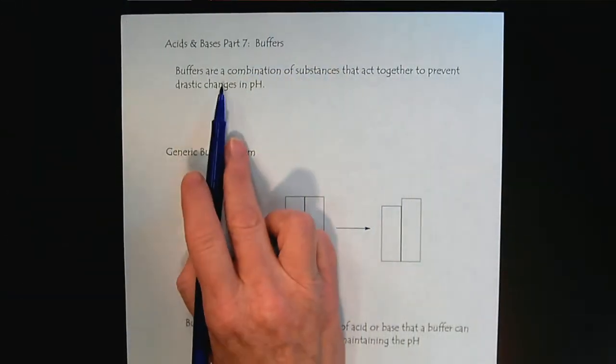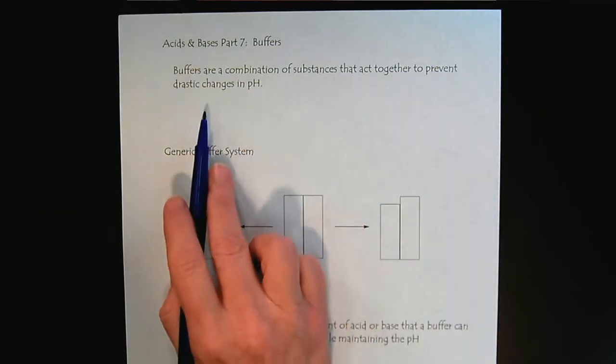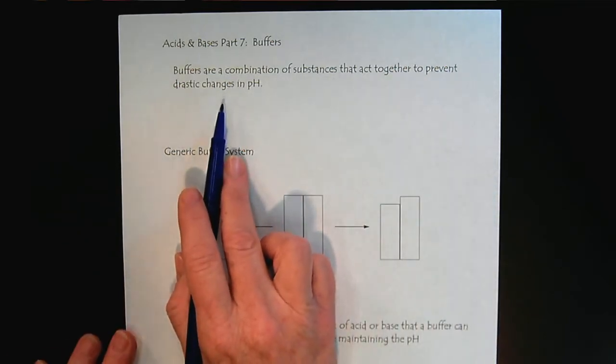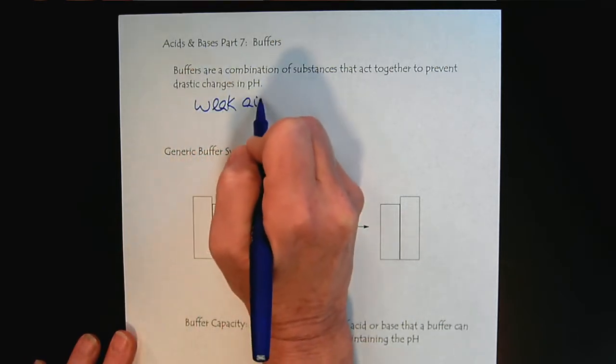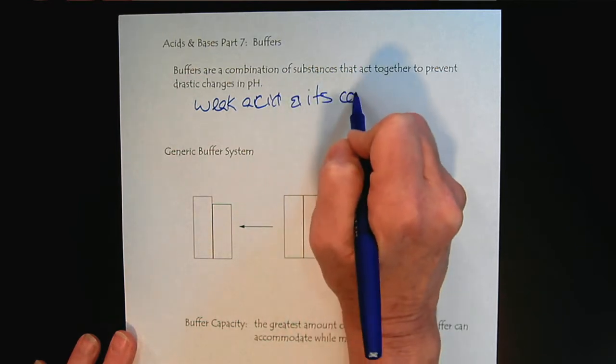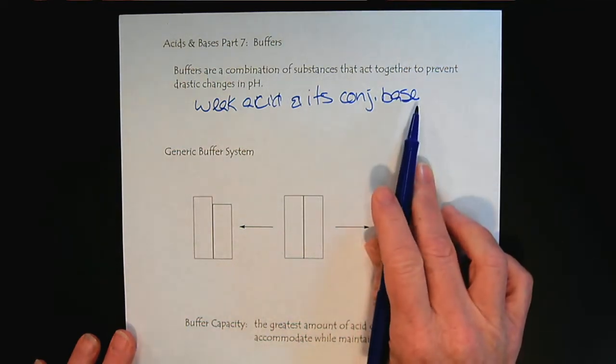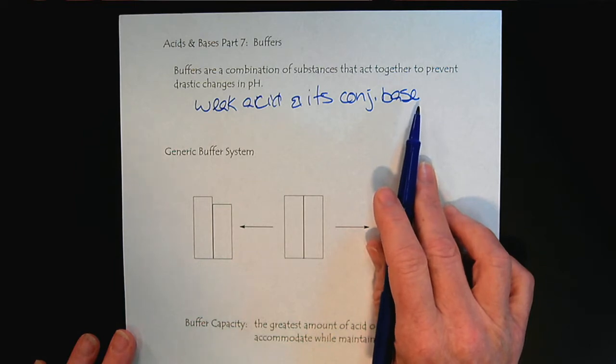Buffers are a combination of substances that act together to prevent drastic changes in pH. The typical buffer systems are a weak acid and its conjugate base. This is a concept from the Bronsted-Lowry definition of acids and bases, so if you're not sure what I'm talking about here, please go back to that tutorial.